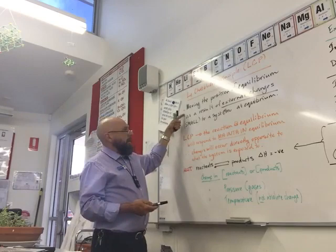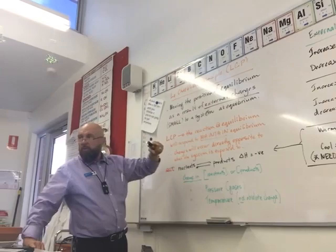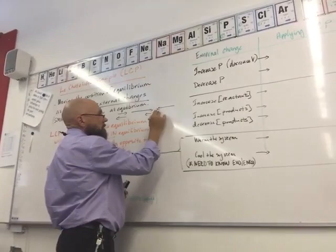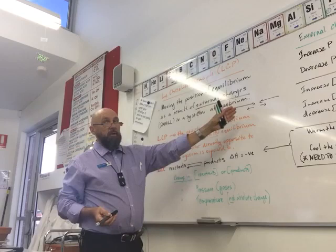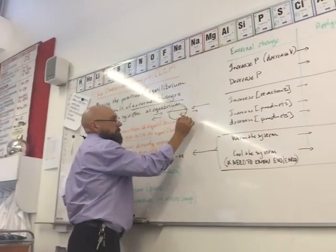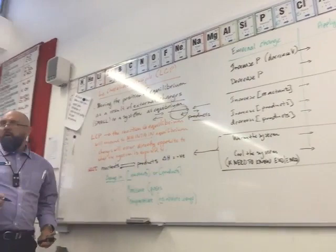So all we're doing now is moving the position of equilibrium as a result of external changes. For a reaction at equilibrium, we're trying to make it go this way or that way. How do I push equilibrium to the right towards products? How do I push equilibrium to the left to reactants? The application of this is mainly to do with products. So most of the time, in all the chemical reactions we're going to look at, we're focusing on products. Anyone have any idea why?